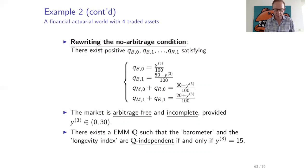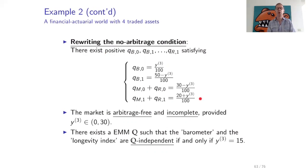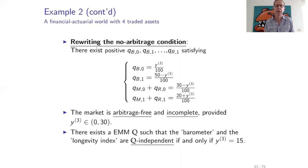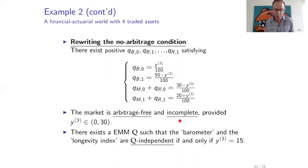For these values to be valid probabilities, they must each be strictly positive, which means y3 must be between 0 and 30. If y3 is in the open interval (0, 30), the market will be arbitrage free because there exists an equivalent martingale measure, but it will be incomplete because there are many solutions. We have six unknowns and only four conditions. If y3 is outside the interval (0, 30) — for instance 60 — then no positive Q can be found and there will be an arbitrage opportunity.